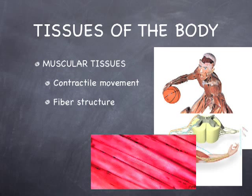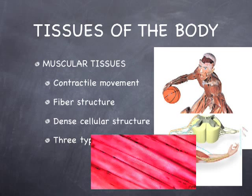All muscle tissues have a sort of fibrous structure — long, stringy kinds of cells that shorten to make their length shorter and create movement. This is one of those tissues that has a dense cellular structure, kind of like epithelial tissues — the tissue is 99% cells. There are three types, which we'll go into later.